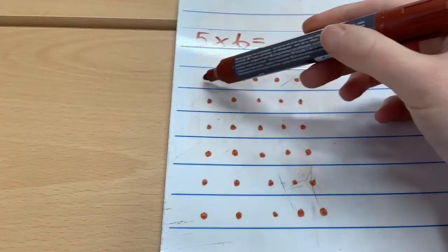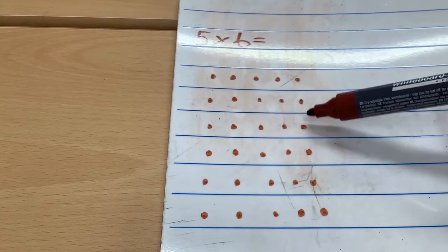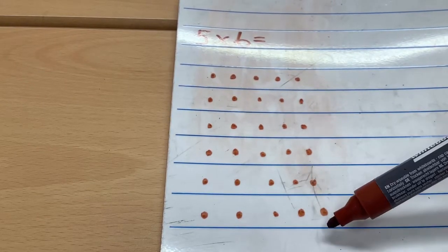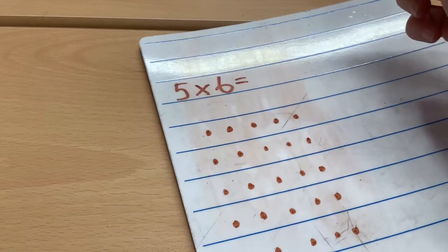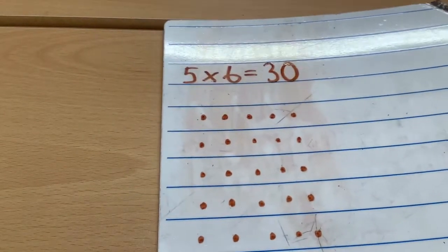I can see that I've got 5 six times. And if I count in 5s, 5, 10, 15, 20, 25, 30. So the product of 5 multiplied by 6 equals 30.